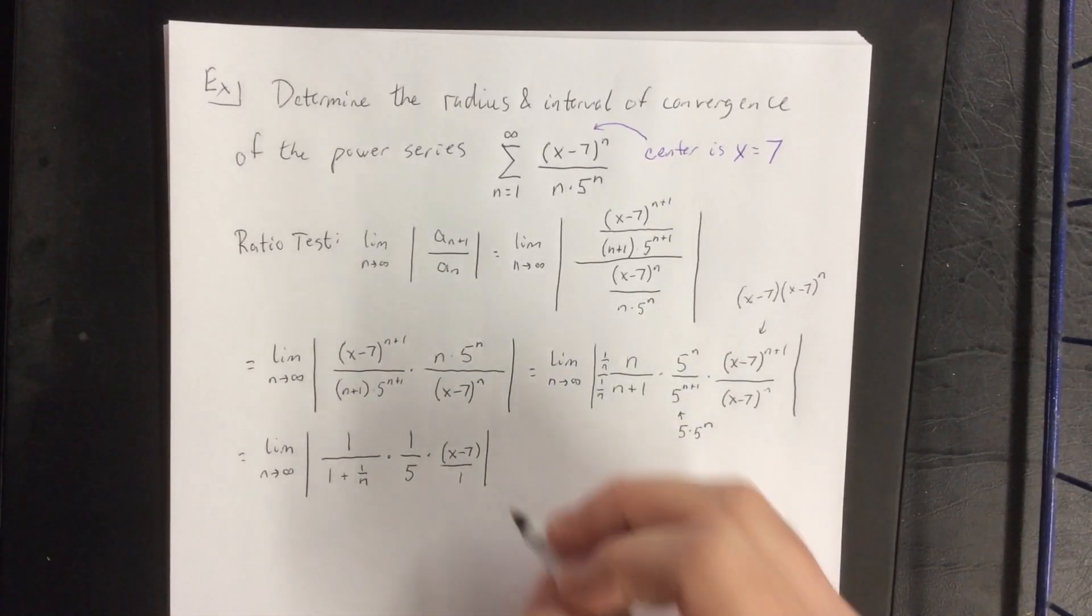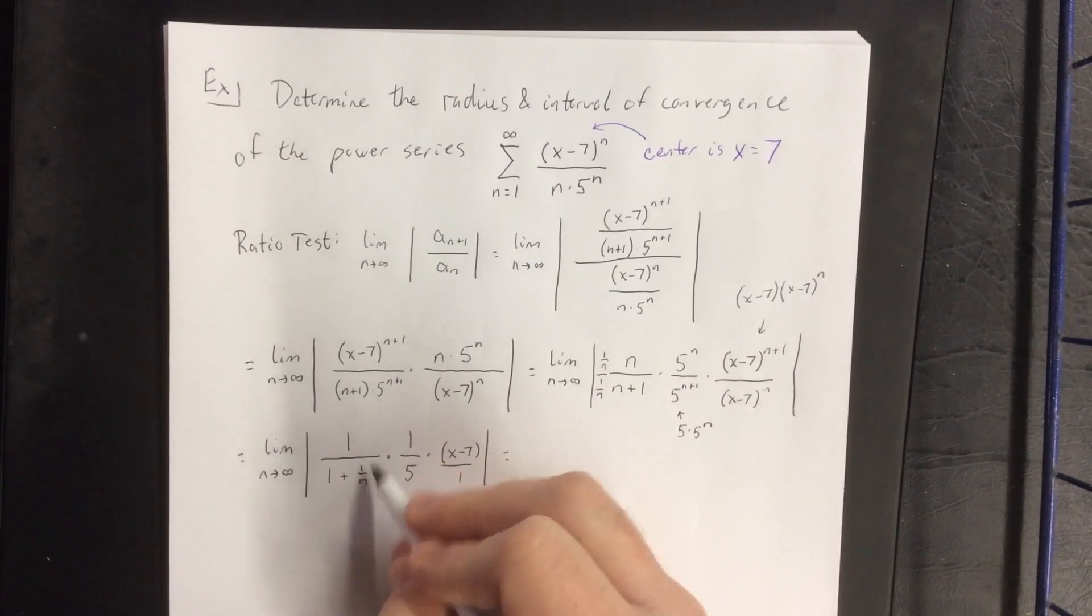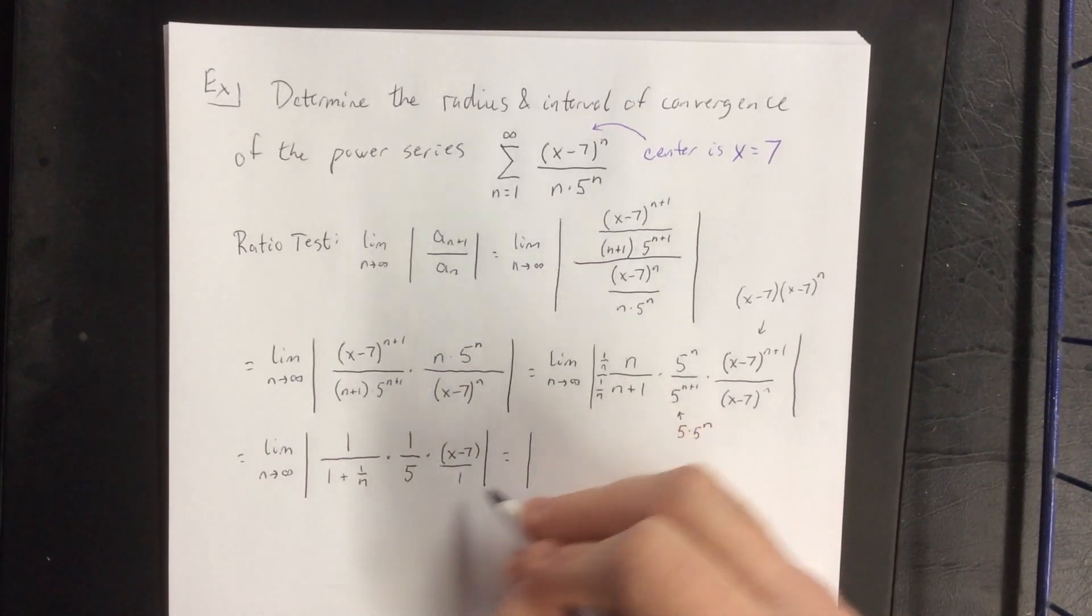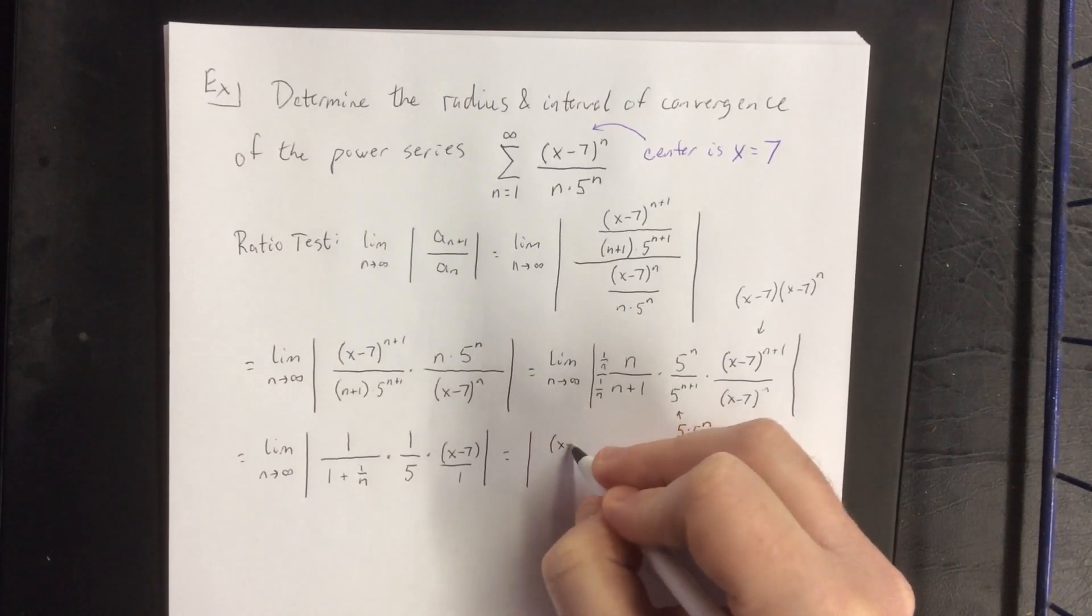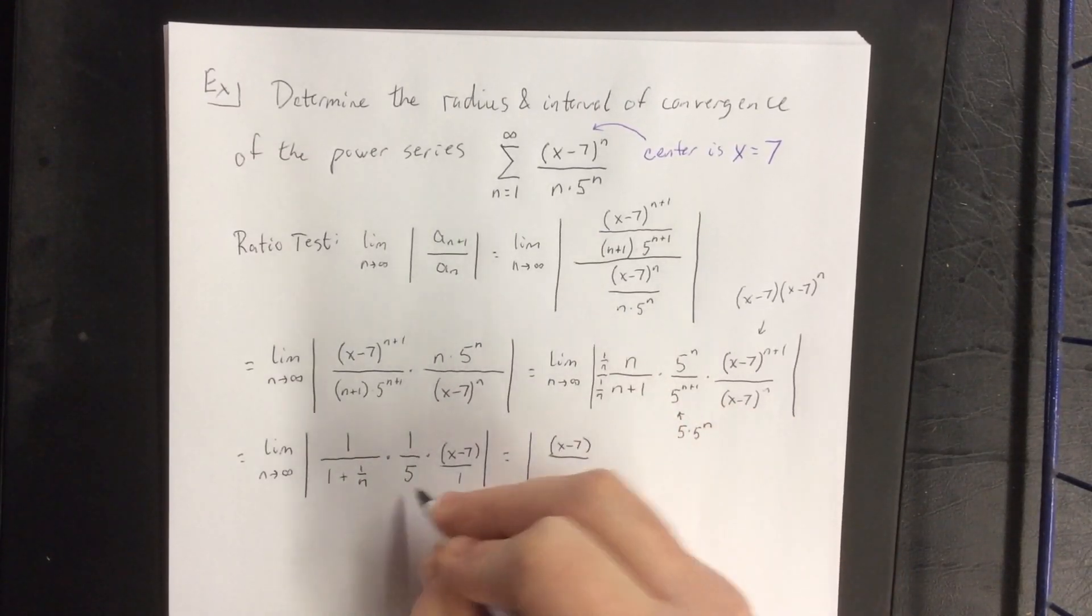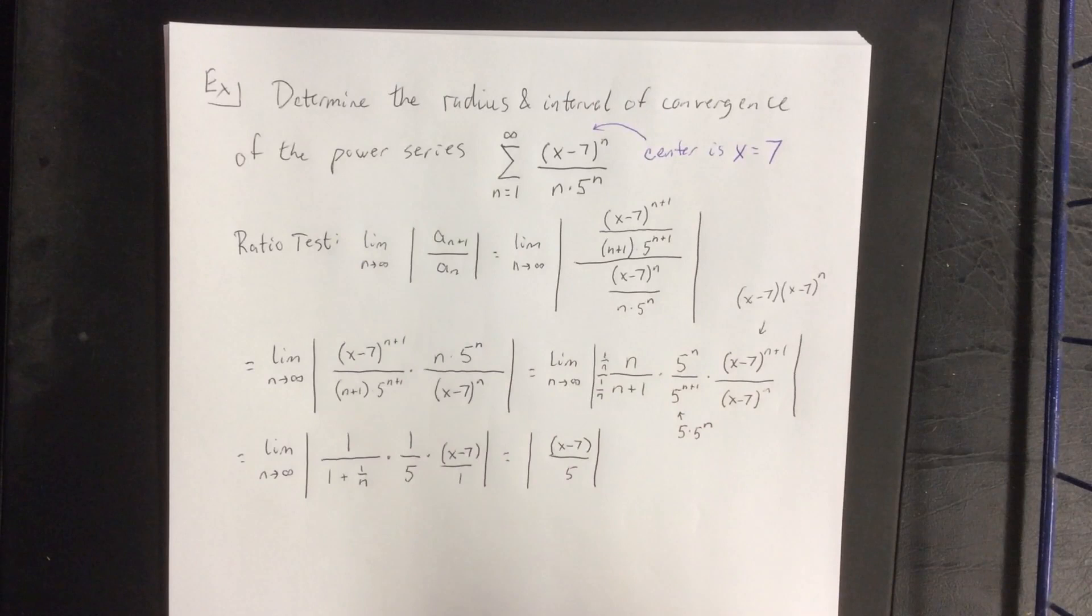Now as I take the limit as n goes to infinity, the first fraction will become 1 over 1 plus 0, that's 1. The last fraction will become x minus 7 on the top and the second fraction will leave us with 5 on the bottom.